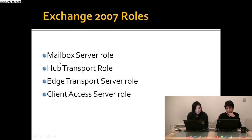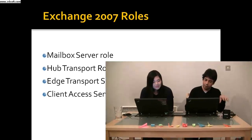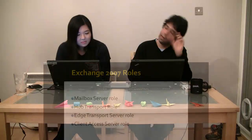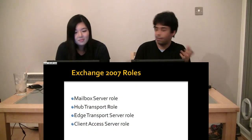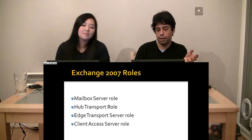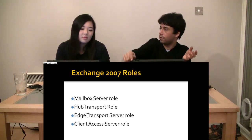The next thing you've got is the hub transport role. That's the thing that's responsible for delivering email messages. So if you had a larger organisation, let's say ITVX, we've got a branch here in America. We would have a mailbox server here and a hub transport server here. And over in America, they would also have a hub transport server and a mailbox server as well. And so it goes to my mailbox, to my hub, to their hub, to their mailbox.